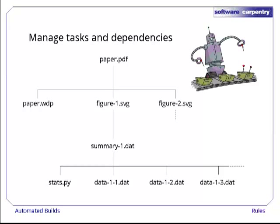For the paper the robot is working on, paper.pdf depends on paper.wdp, figure1.svg, and figure2.svg, while figure1.svg depends on summary1.dat, which in turn depends on all the files with names like data11.dat, data12.dat, and so on.